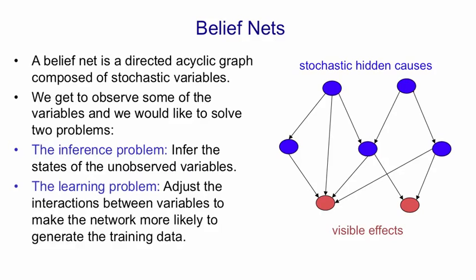The second problem is the learning problem. That is, given a training set composed of observed vectors of states of all of the leaf nodes, how do we adjust the interactions between variables to make the network more likely to generate that training data? Adjusting the interactions will involve both deciding which node is affected by which other node, and also deciding on the strength of that effect.